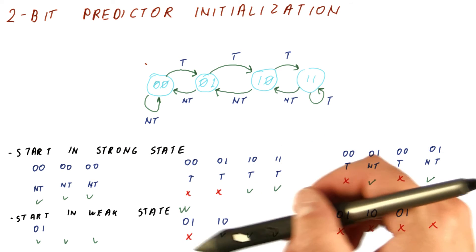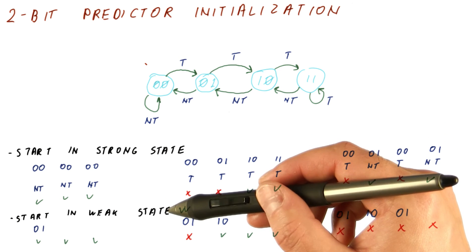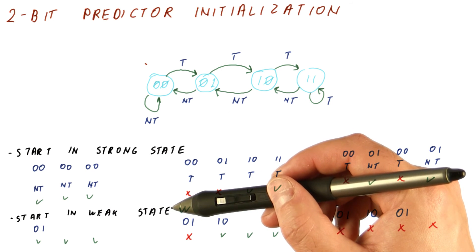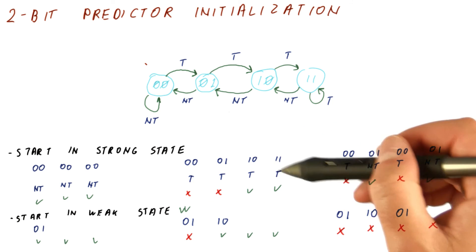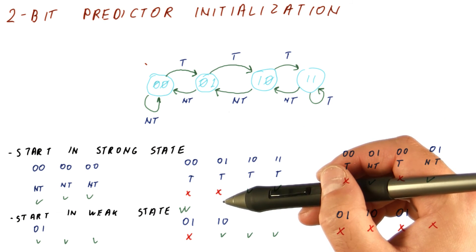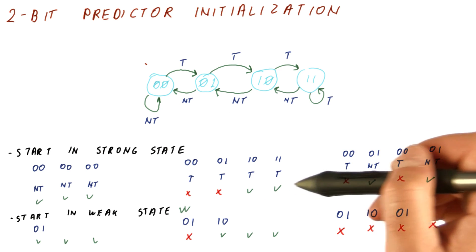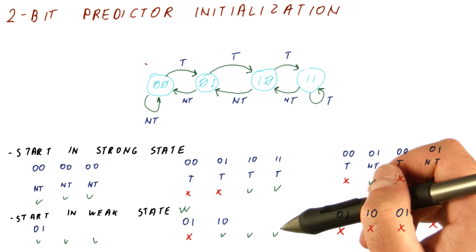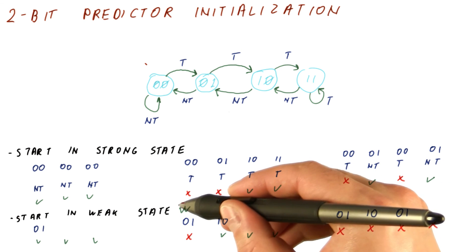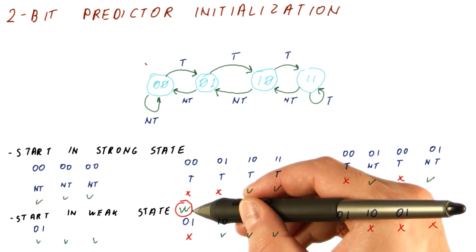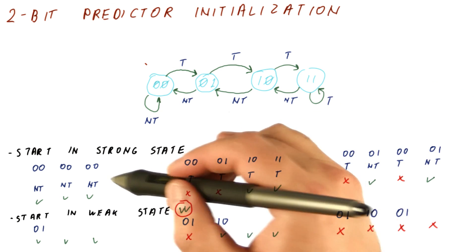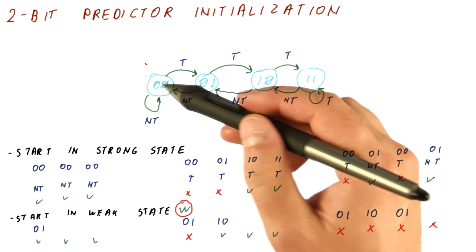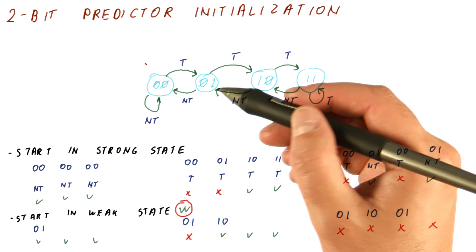Fortunately, this worst-case alternating behavior is much less common than mostly-taken or mostly-not-taken behavior. So probably it's a good idea to start in a weak taken state, because taken branches are slightly more common than not taken. But in reality, it doesn't really matter much, because if the branch is mostly taken, one misprediction initially is not really going to be very costly. From then on, it's going to behave the same way regardless of what we started off with. So although it seems like a good idea to start in the weak taken state, in practice, the overall accuracy of the branch predictor is affected very little by what exactly we start off in. So we might as well just start in the zero-zero state, because that's the easiest state to initialize into.